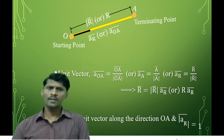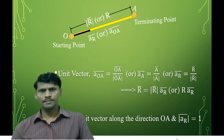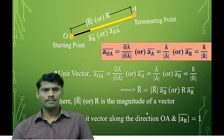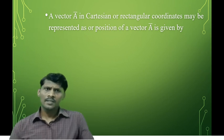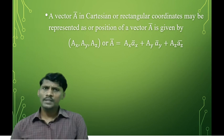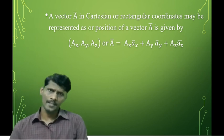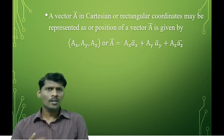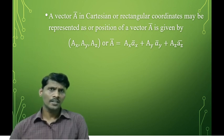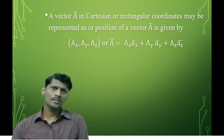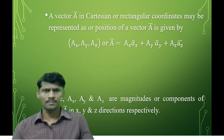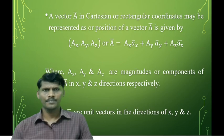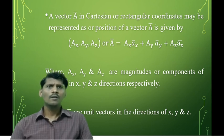In the Cartesian coordinate system, a vector A-bar can be represented as A-bar equals Ax·Ax-hat plus Ay·Ay-hat plus Az·Az-hat, where Ax, Ay, and Az are the components or magnitudes in the x, y, and z directions, and Ax-hat, Ay-hat, and Az-hat are the unit vectors in the x, y, and z directions. In the next class, we will discuss coordinate systems.